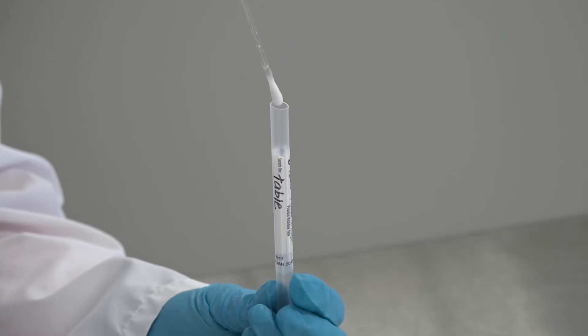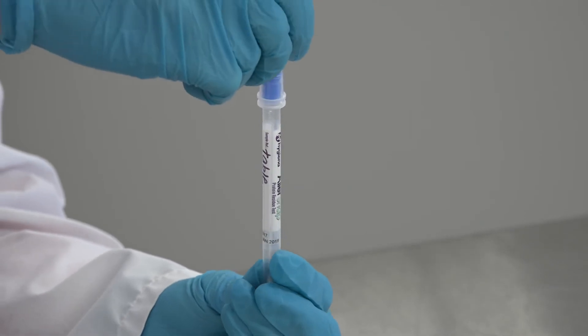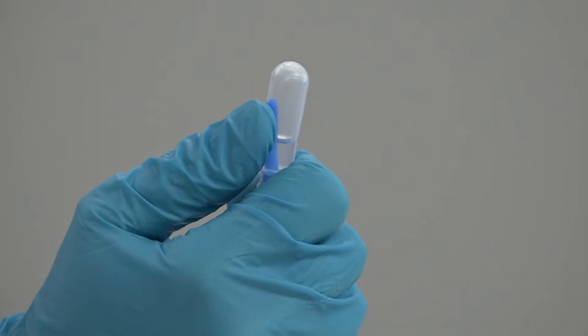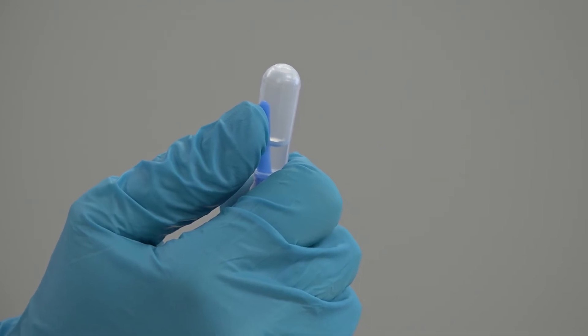Step number five, replace swab in tube. Step number six, to activate the test, snap the bulb by placing the swab in your fist.